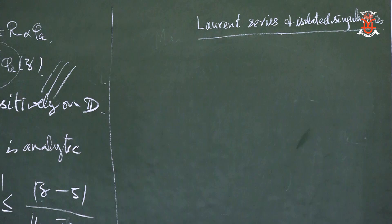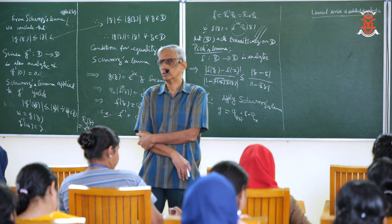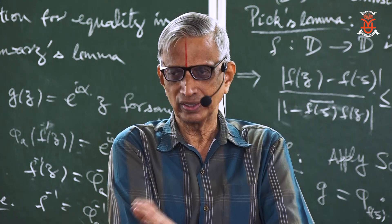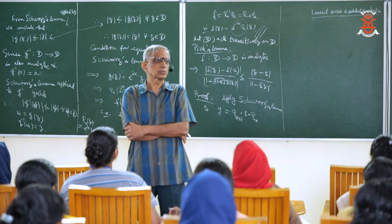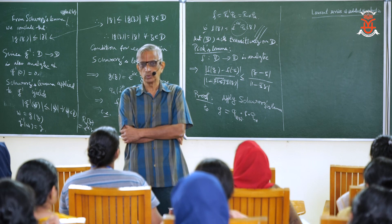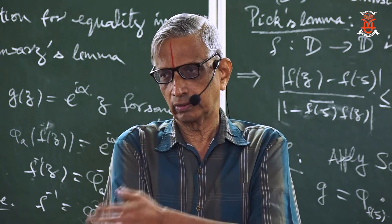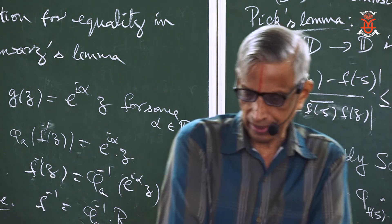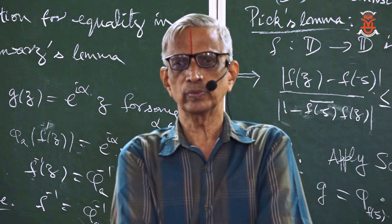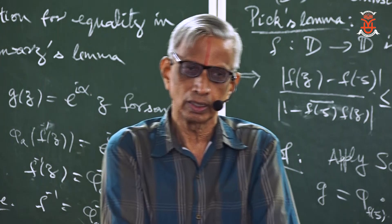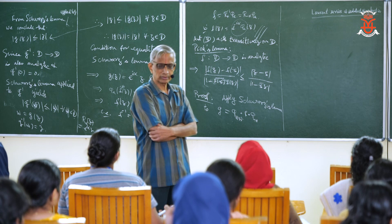Just like you have power series expansion for functions which are analytic, you have a series expansion for functions with singularity. A singularity is a point where the function is not necessarily analytic. This expansion is in terms of both positive and negative powers of z, whereas a power series only has non-negative powers. This expansion around a singularity is called the Laurent series.